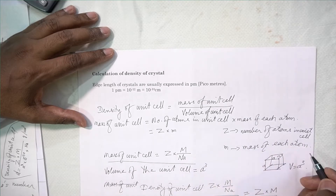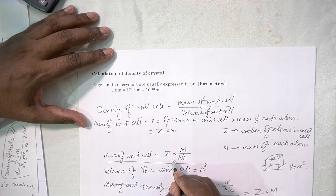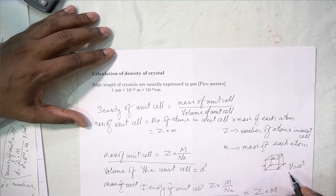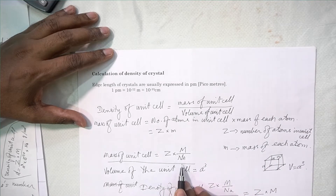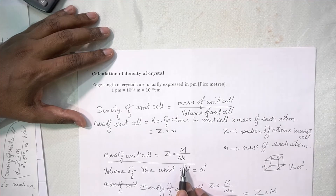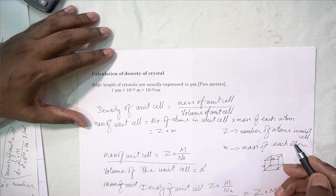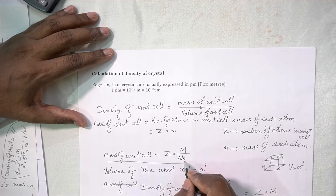Mass of unit cell is equal to Z into capital M upon Na. Capital M is the molecular mass. Molecular mass upon Avogadro's number. So if you take one mole of any substance, it has Avogadro's number of atoms or molecules in it. So Z into M upon Na gives you the mass of each atom.